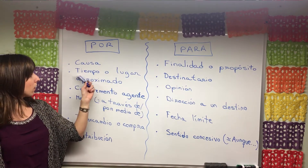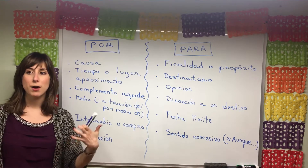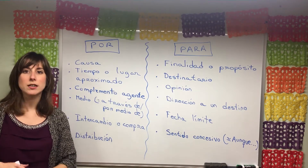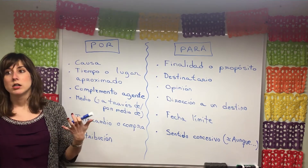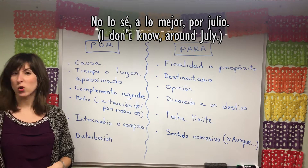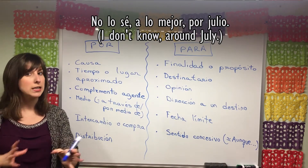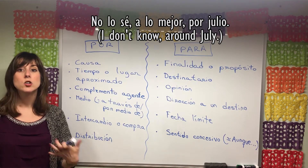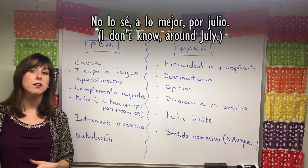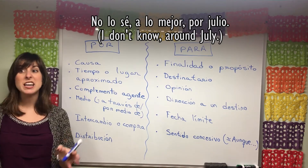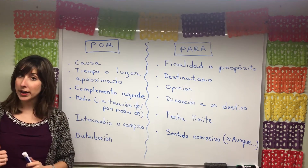Regarding approximate time, if someone asks 'Marta, ¿cuándo vas a España?' — Marta, when are you going to Spain? — you could say 'No lo sé, a lo mejor por julio' — maybe around July — because you're not sure of the exact dates yet. Or 'por finales de agosto,' maybe around the end of August. It's always an approximate time, not a specific date.